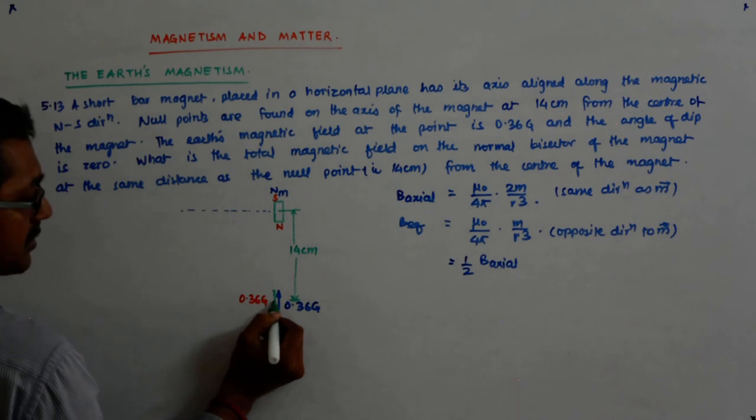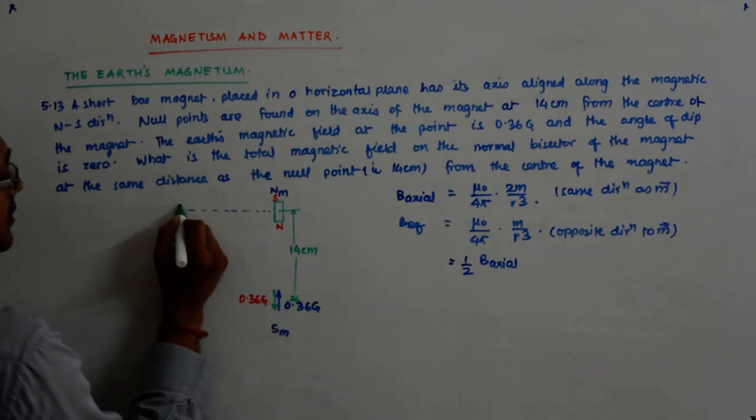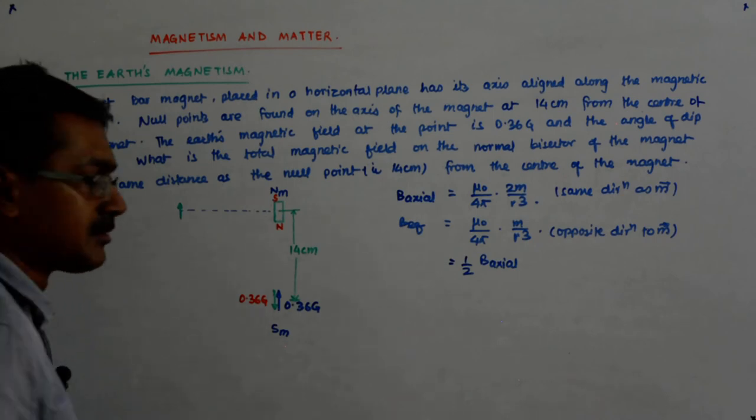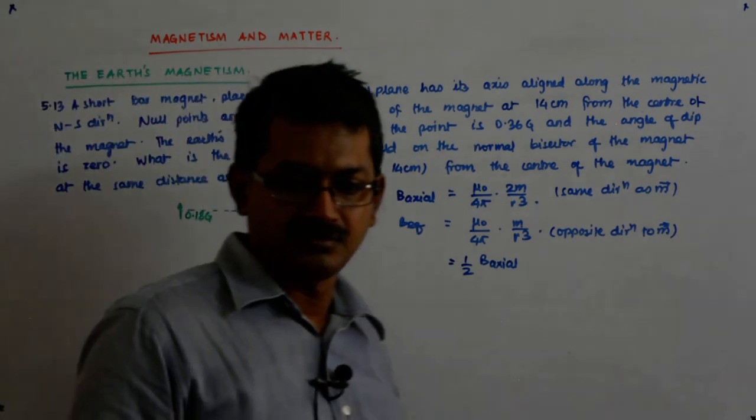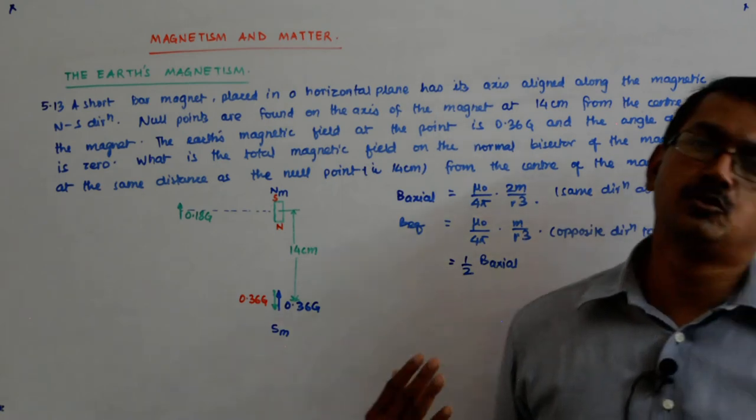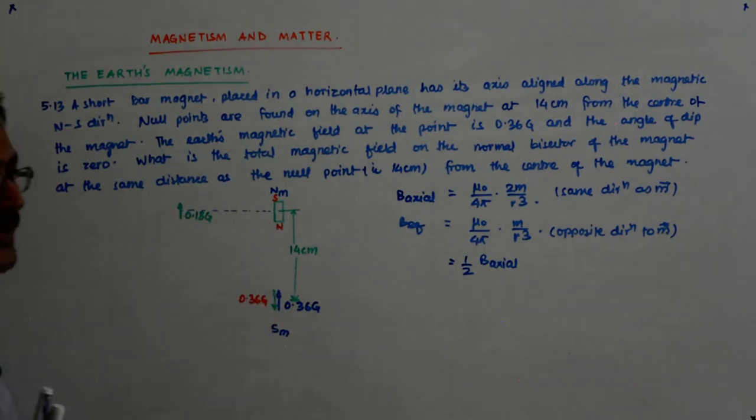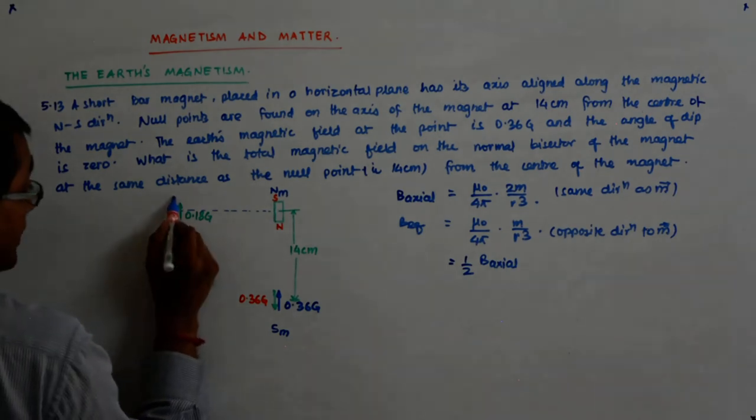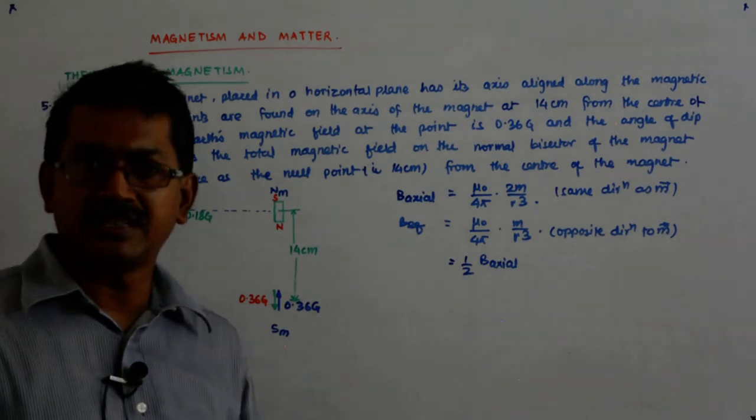This green was the field due to the magnet. Now what is the field due to the magnet? It's 0.18 Gauss, half of 0.36. The earth's magnetic field does not vary just by a distance within distance of 14 centimeters. Both the direction and the magnitude, the earth magnetic field remain the same, 0.36 Gauss.